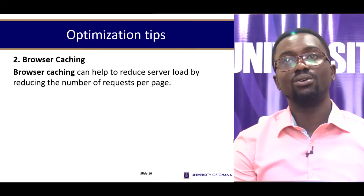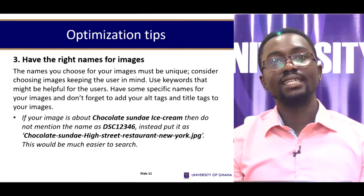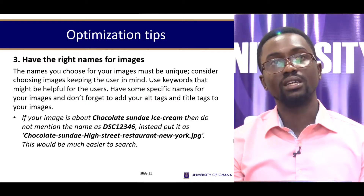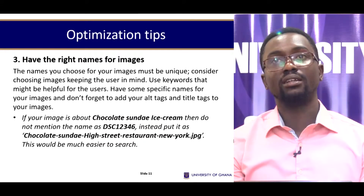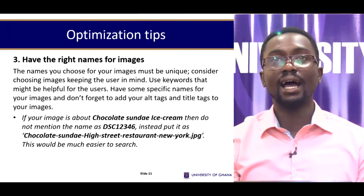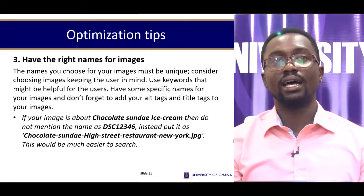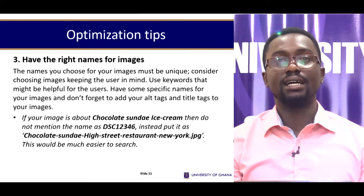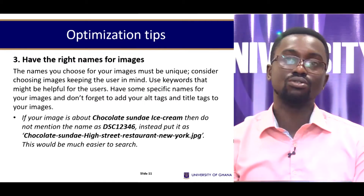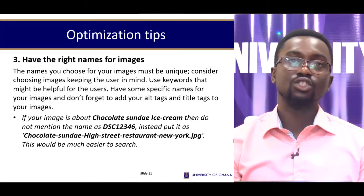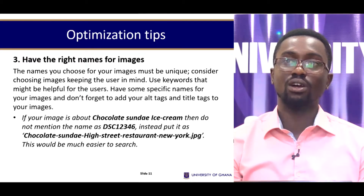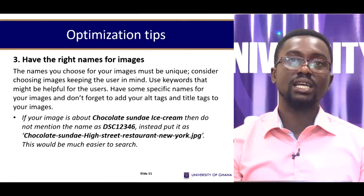Browser caching can also help reduce server load by reducing the number of requests per page. Regarding image naming — the names you choose for your images must be unique. Consider choosing image names keeping the user in mind; use keywords that might be helpful to users. Add alt tags and title tags to your images. For example, if your image is about a chocolate sundae ice cream, label it as chocolate-sundae-high-street-restaurant-new-york.jpg rather than a default camera name like DSC12346, which would be much easier to search.